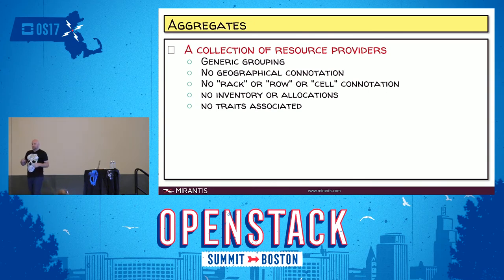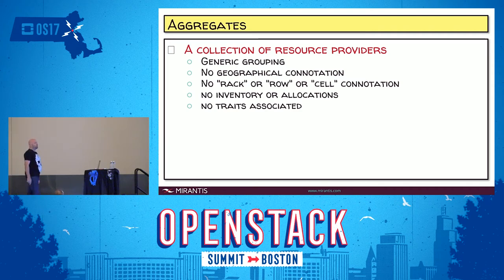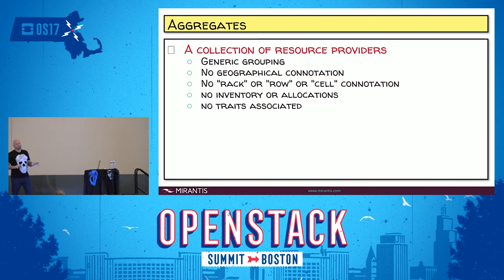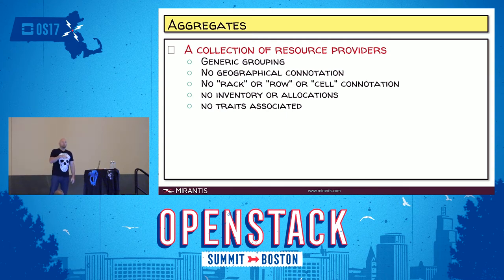The one other model in the resource providers' data modeling is an aggregate. An aggregate is simply a collection of resource providers. There's no connotation about geography or physical location — an aggregate does not mean it's a rack or a row or a cage in a data center. It's just a group of resource providers. The aggregate doesn't have inventory or allocations associated with it; the resource providers in that aggregate do. It's merely a grouping mechanism.